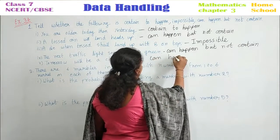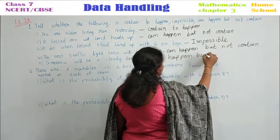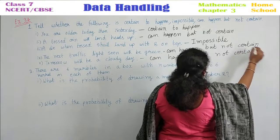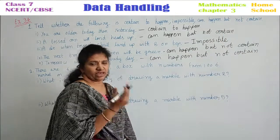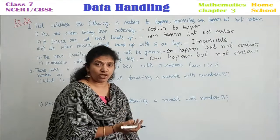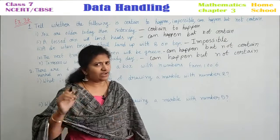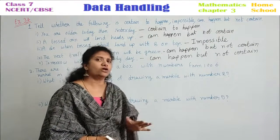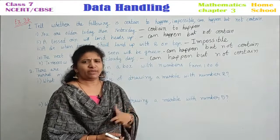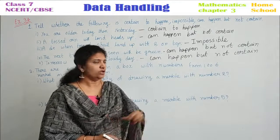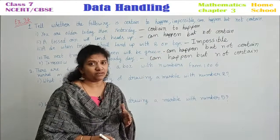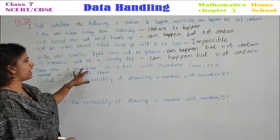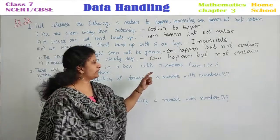They asked us to classify these sub-questions into three answers: either it may be happening or maybe not happening, or it is impossible. If it definitely happens, write it as certain to happen. If it is not at all possible, write impossible. If it may have a chance of happening or not happening, write can happen but not certain.